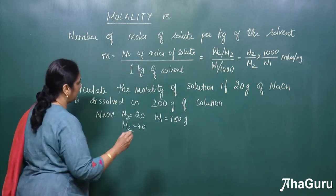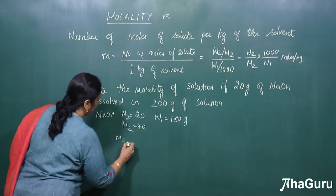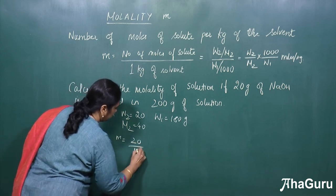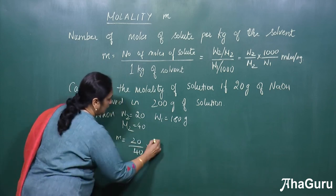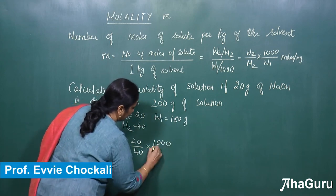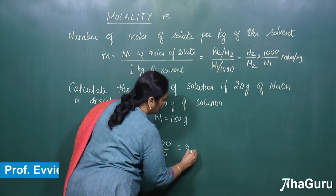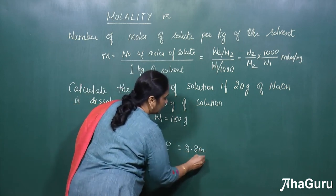So substituting this value in the formula, M will be equal to W2 is 20, M2 is 40, into 1000 divided by 180. So this will be equal to 2.78 molal solution.